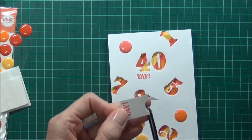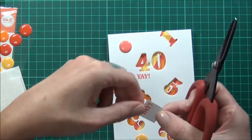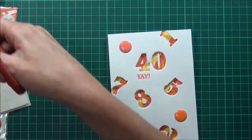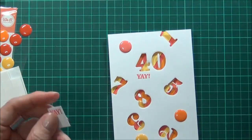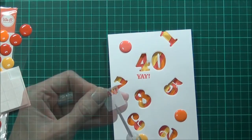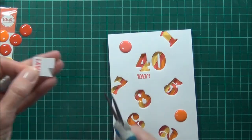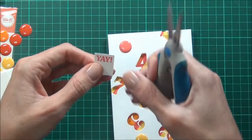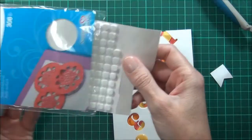So I don't like the way that the yay turned out. I didn't stamp it very well, so I'll create a little banner. I might just use a different pair of scissors. Some more foam dots.